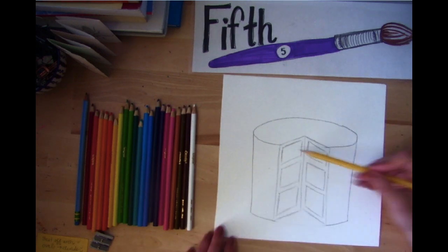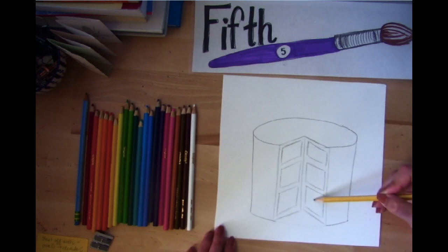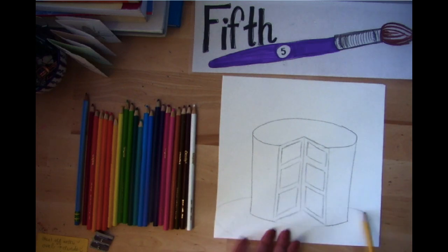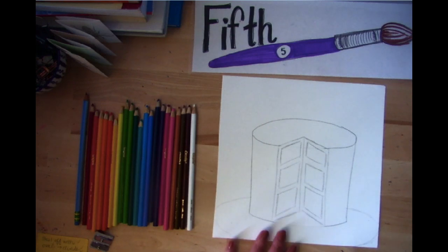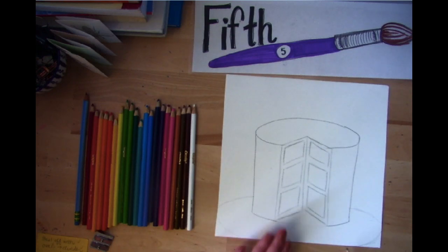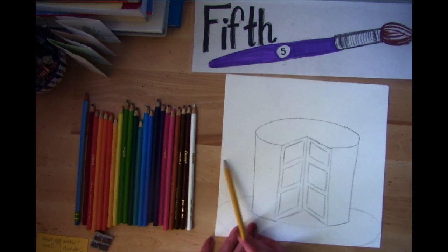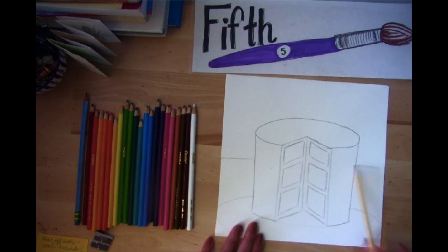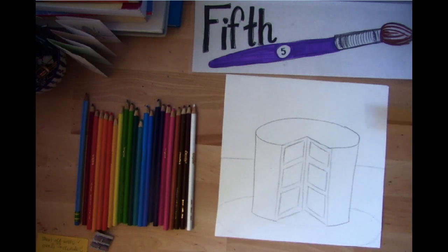So after I've drawn my six different sections of cake, I want to give my cake a plate. Wayne Thiebaud didn't do this, but we're going to add a plate so our cake has something to rest on. So we have our cake and then I want to draw the table and the background. So this is going to be my back wall and this is going to be my table.